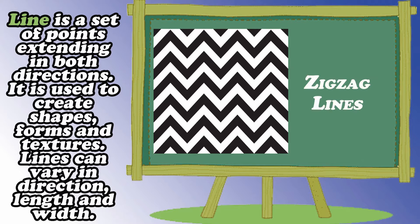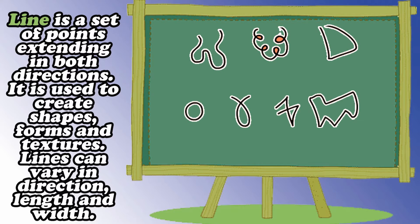Another line is the zigzag lines. Zigzag lines are a series of diagonal lines joined at ends. They can convey action and excitement as well as restlessness and anxiety. And this one is what we call curve lines. Curve lines are lines that bend and change direction gradually. They can be simply wavy or spiral. Such lines convey the feelings of comfort and ease, as well as sensual quality as they remind us of the human body.